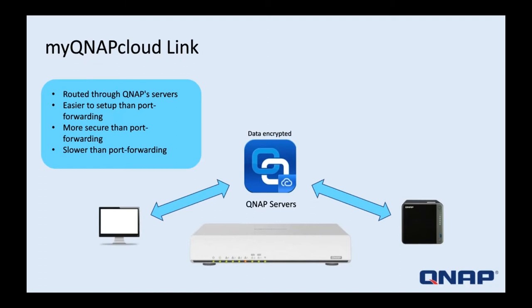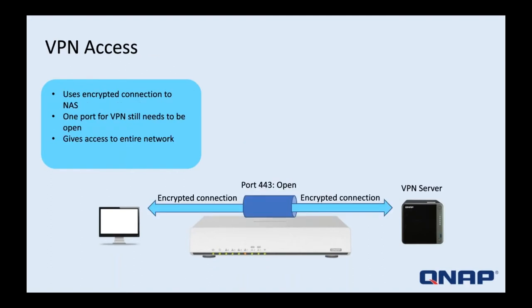MyQNAPCloud Link is another way to access your NAS remotely without forwarding any ports. It routes an encrypted connection through QNAP servers. Some may not be comfortable with data going through QNAP servers, but it is encrypted. This method does give slower access since data routes through QNAP servers first, but it is more secure from a cybersecurity standpoint. It's also the simplest way to set up remote access.